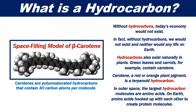Hydrocarbons also exist naturally in plants. Green leaves and carrots, for example, contain carotene. Carotene, a red or orange plant pigment, is a terpenoid hydrocarbon.